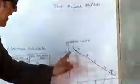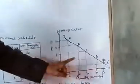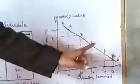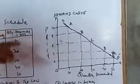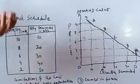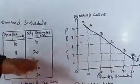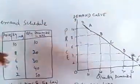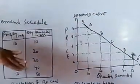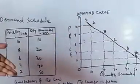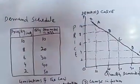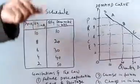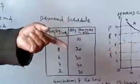We draw a demand curve DD' which passes through five points A, B, C, D, and E, corresponding to the five price-quantity combinations. The downward slope — the negative slope — of the demand curve DD' clearly shows that there exists an inverse and opposite relationship between the price and the quantity demanded of a commodity.